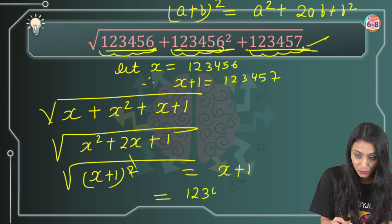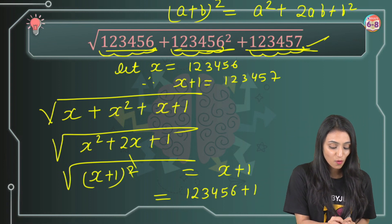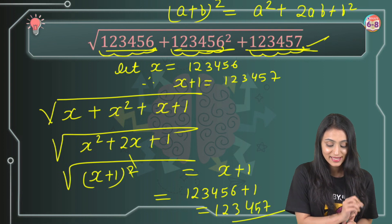We assume that to be 123456 plus 1. This is x. So our answer over here is going to be equals to 123457.